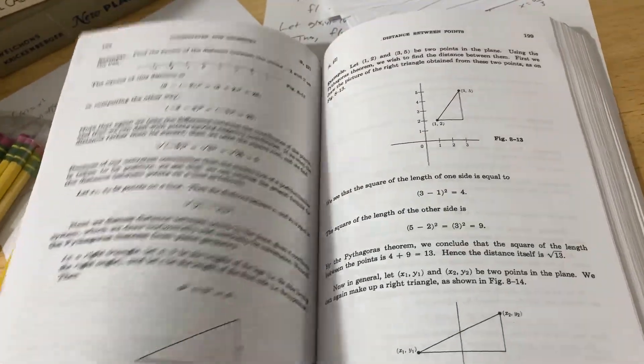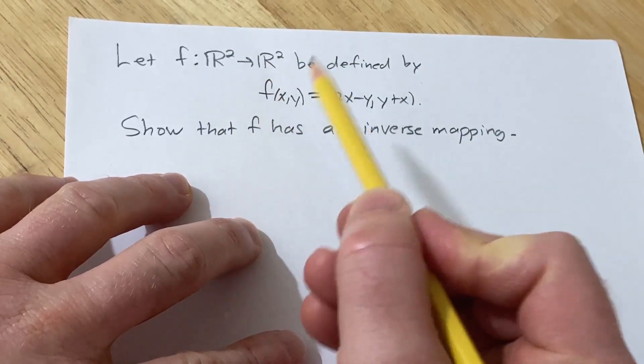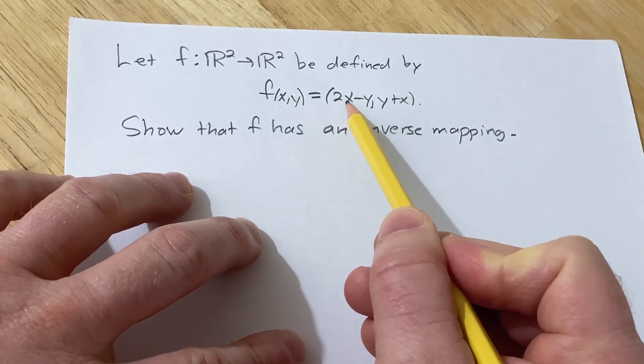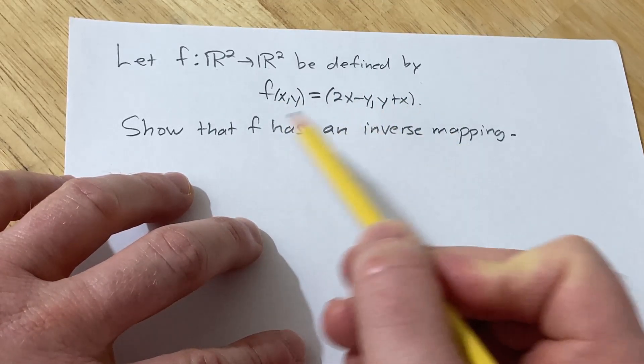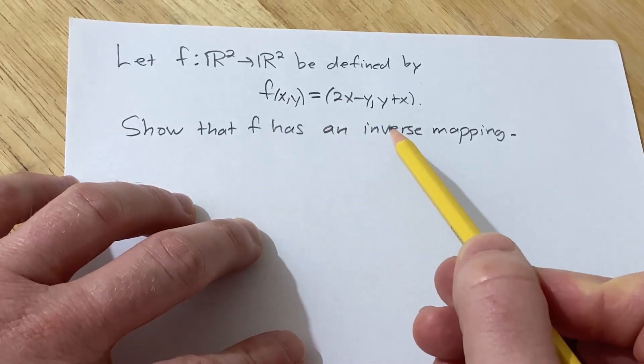So let's just go ahead and do a math problem. And I picked one that is a little bit harder. So let's try to work through it. So this is the problem. We have a function from R squared to R squared, and it's defined by f of (x,y) equals (2x - y, y + x). And the question is to show that f has an inverse mapping.